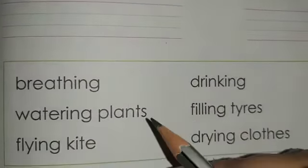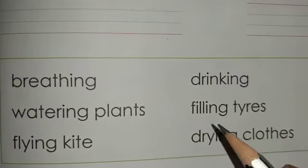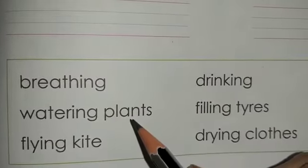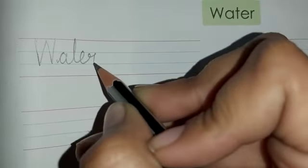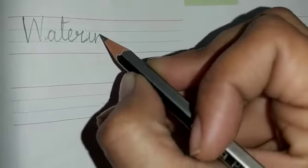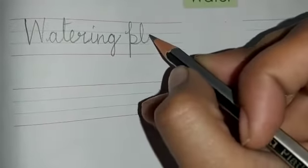The activities listed are: breathing, watering plants, flying kite, drinking, filling tires, drying clothes, washing and cooking. Now out of all these, what activities are to be written in the uses of water? Watering plants — we use water for watering plants. So we will write down, number 1: watering plants. W-A-T-E-R-I-N-G, P-L-A-N-T-S.